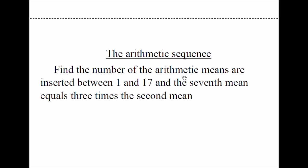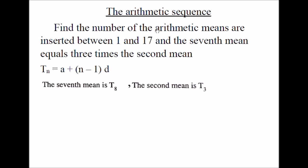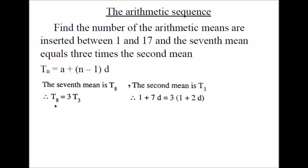Example: find the number of arithmetic means inserted between 1 and 17 such that the 7th mean equals 3 times the second mean. We want to find the number of arithmetic means between 1 and 17 such that the 7th mean equals 3 times the second mean. The 7th mean is the 7th term after the first term, so this is T8. The second mean is the 3rd term. So T8 equals 3 times T3.